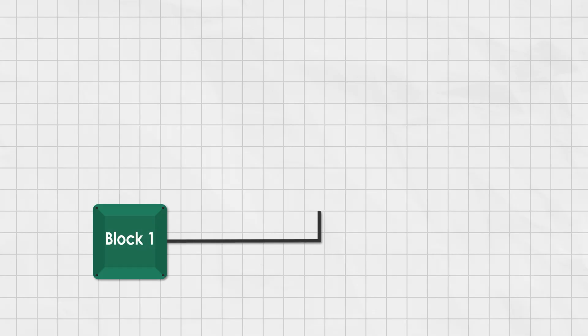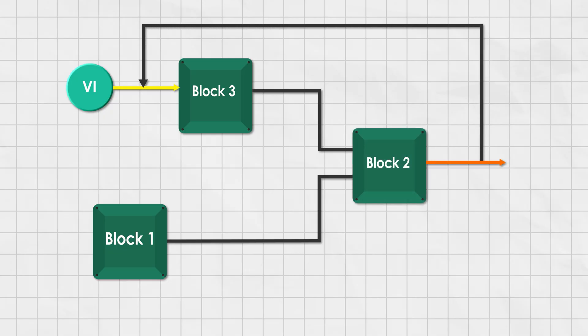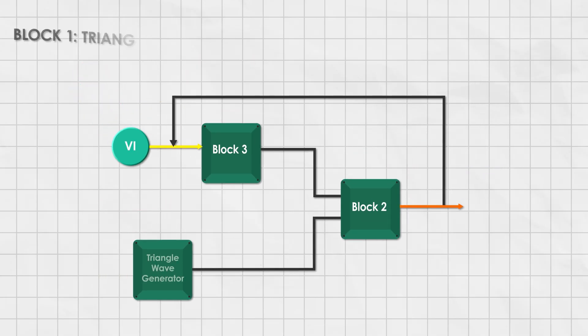To keep this thing simple and logical, let's break down the entire PWM generator into three main blocks. First up, the triangular wave generator.